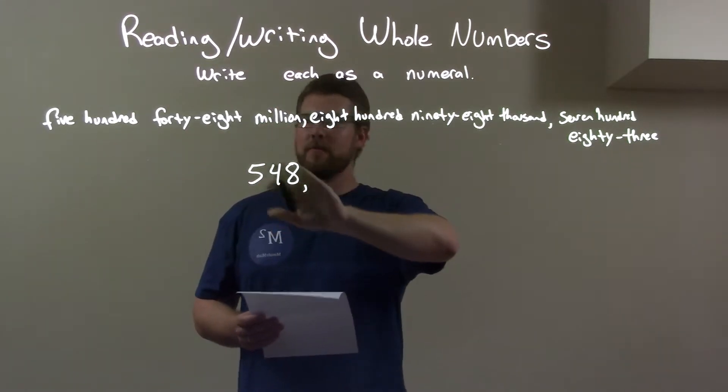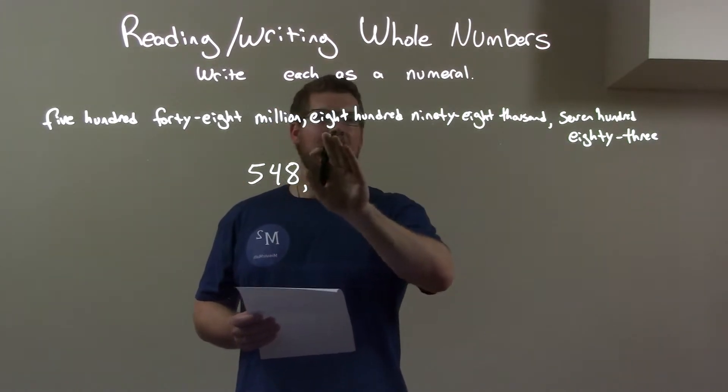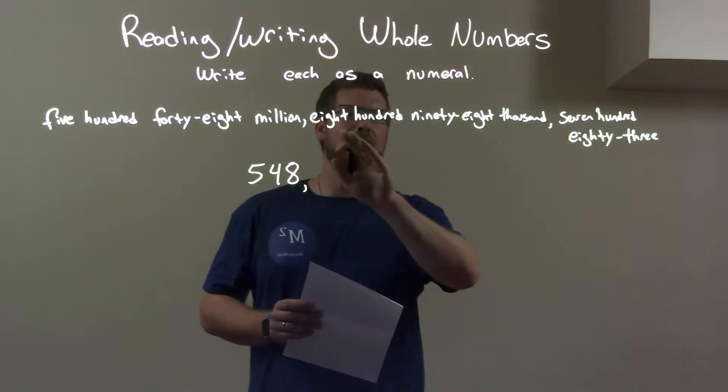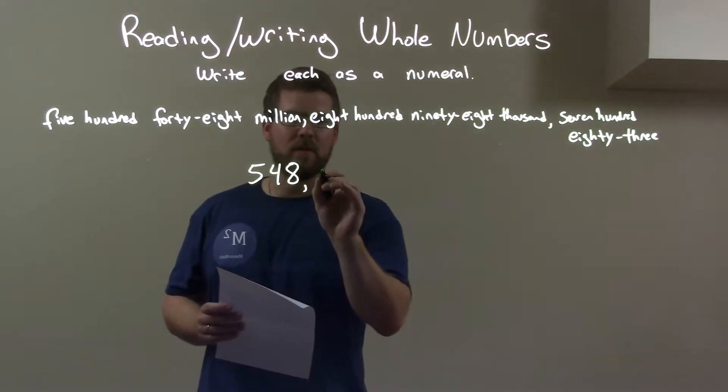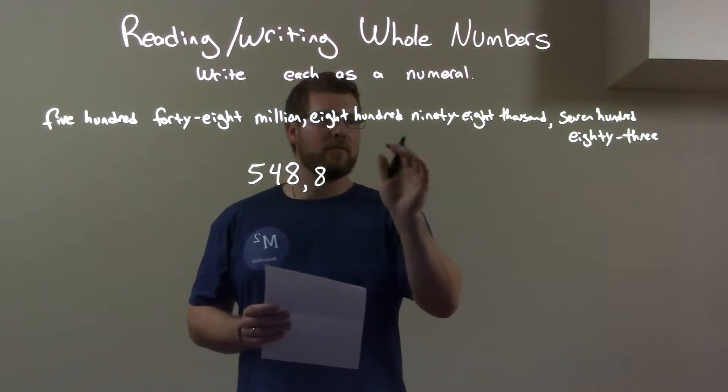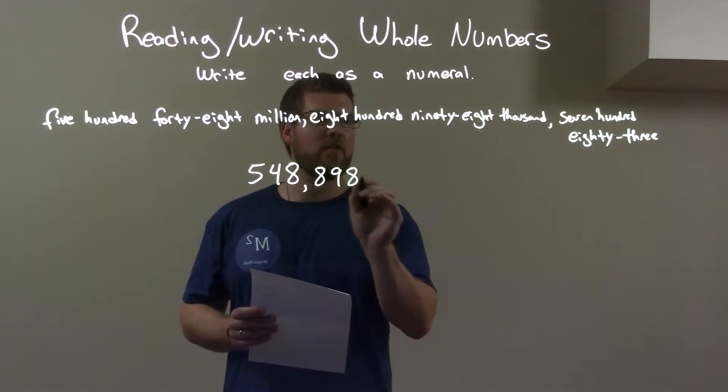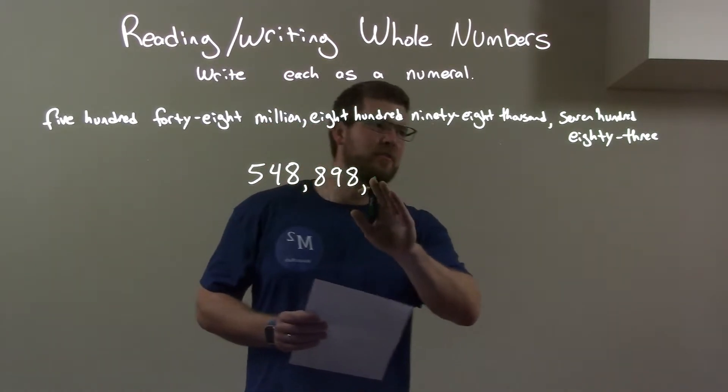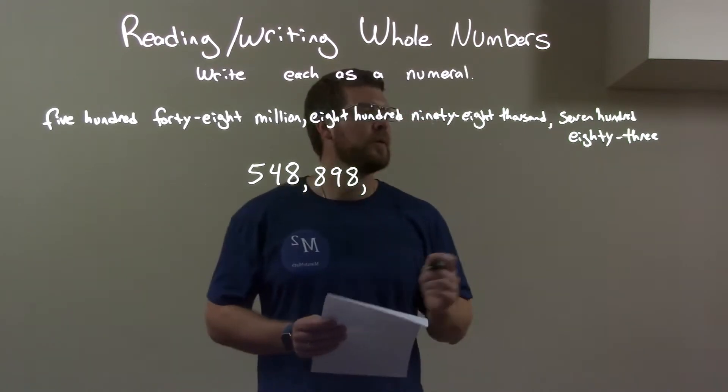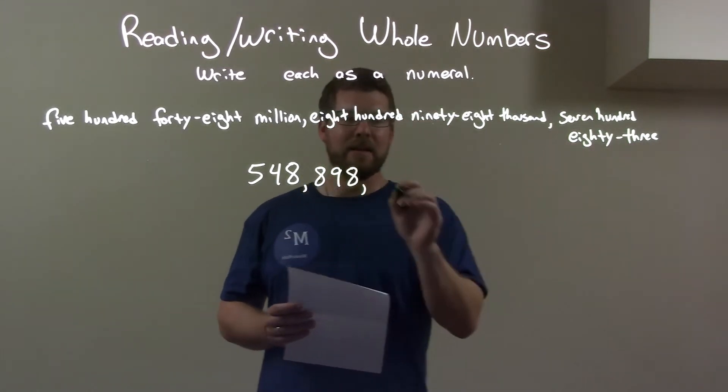So, we have five hundred forty-eight million right here. Eight hundred ninety-eight thousand. So, we have eight hundred thousand, right? Ninety-eight thousand right here. And that means there are going to be three more zeros afterwards. So, we have seven hundred and eighty-three.